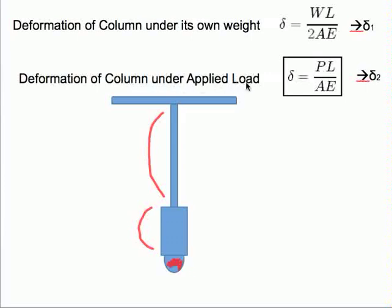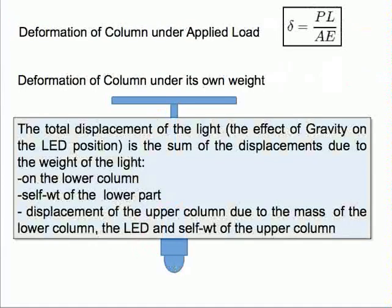We also have the deformation of the column under the applied load. Once this piece is hanging off of it, it's also going to lengthen — the upper piece is going to lengthen due to this weight hanging off the bottom of it. So the total displacement of the light includes: displacements due to the weight of the LED applied to both the lower and upper columns, the self-weight of the lower part, the displacement of the upper column due to the mass of the lower column, the mass of the LED, and its own self-weight.